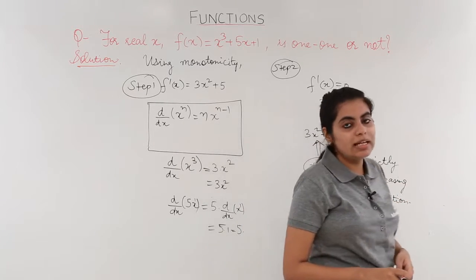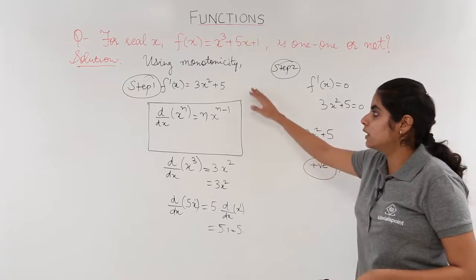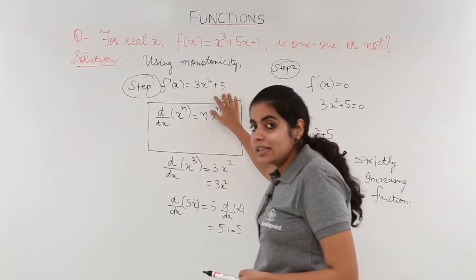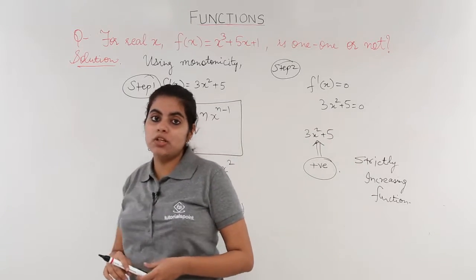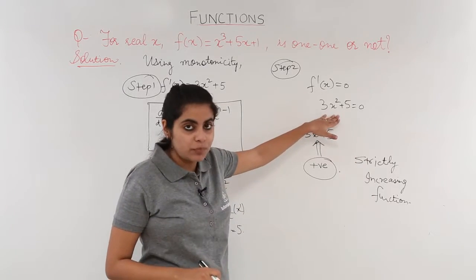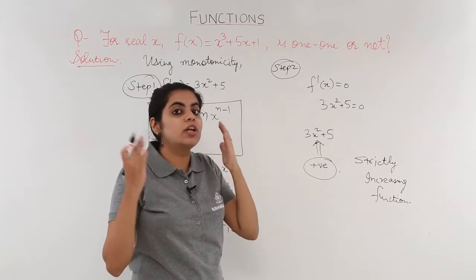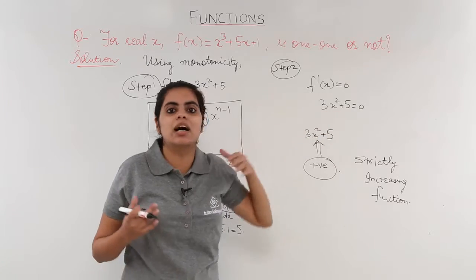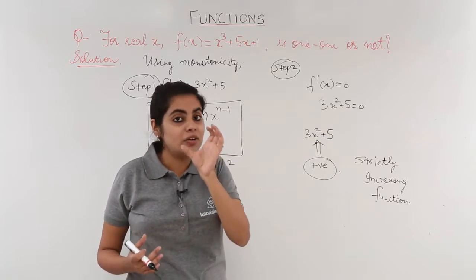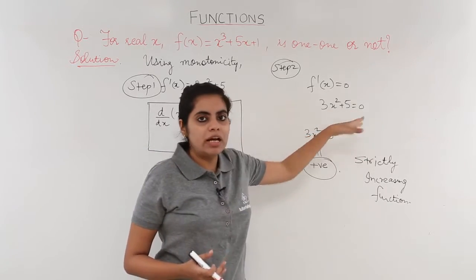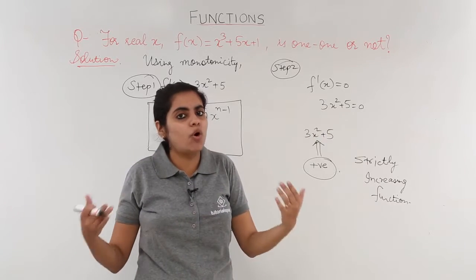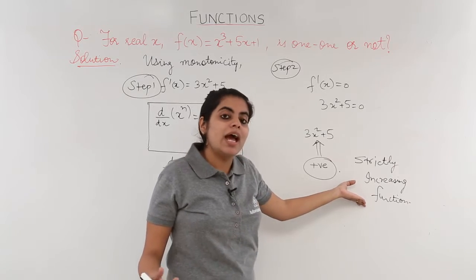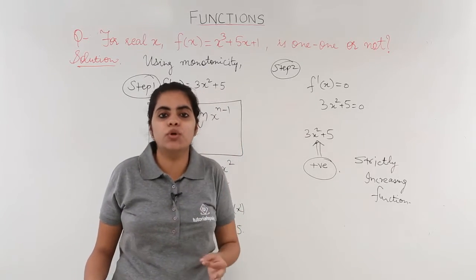I mean to say that when we found out the derivative, we obtained some expression and this expression had x², which is a square quantity. This square quantity will always be positive. Positive multiplied by 3 is again positive. That result, addition with 5 is also positive. So since it is always positive, always increasing, it is a strictly increasing function.